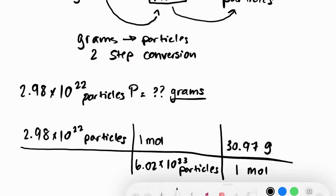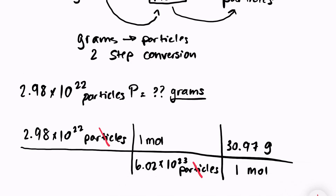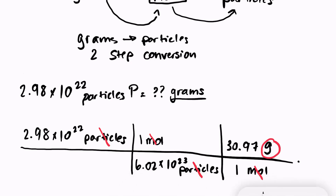Let's double-check our units: particles appear on top and bottom, so they cancel; moles appear on top and bottom, so they cancel — and we're left with just grams. Our answer is 1.53 grams of phosphorus.